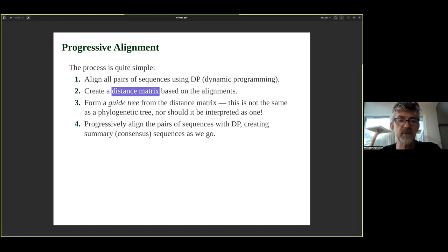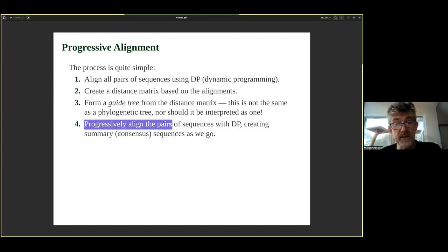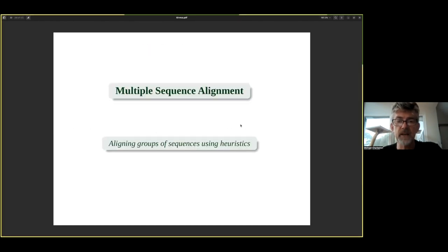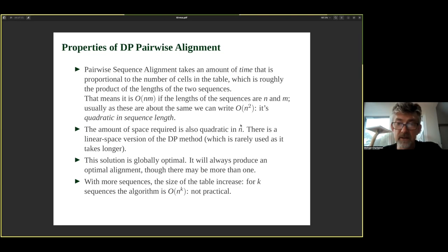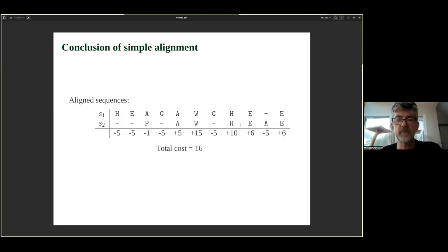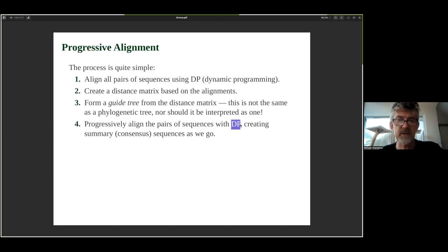Using this guide tree, you progressively align pairs of sequences, pairs of aligned sequences, and alignments using dynamic programming. It's a bit more complicated when you have an alignment of an alignment, but the same principle applies. You still do the same things — you just need to account for the fact that an alignment is more complicated than a single sequence.